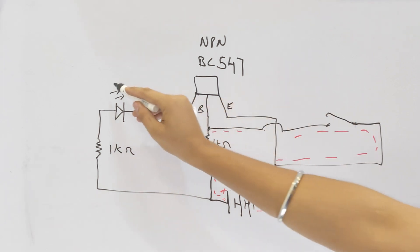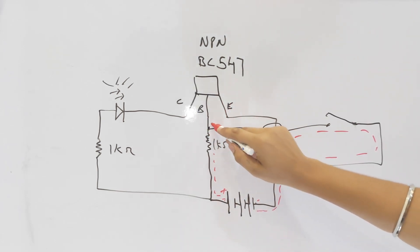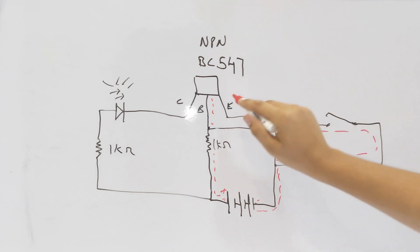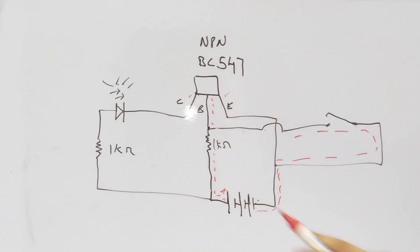The LED will turn on. Current will go to the base terminal and open the collector-emitter junction, and the LED will turn on.